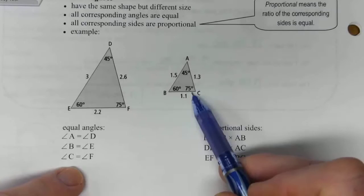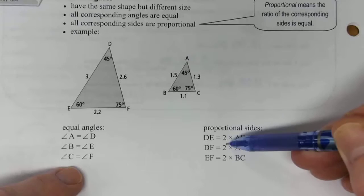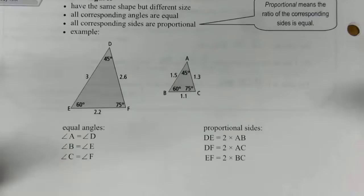And as I said, if you take AB and multiply it by 2 you get DE. And you can do that for all the different sides. 2 is your scale factor from this to this triangle. So those are similar.